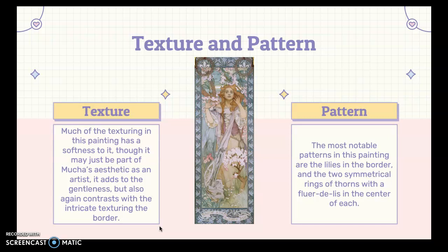The texture isn't very obvious. Everything has a kind of softness to it — even the way the trees are textured almost looks like watercolor. The way the border is textured is more of a contrast to the actual painting because it's very detailed and very intricate, whereas everything else is textured in a very soft way. The most notable patterns are the lilies in the border and the two symmetrical rings of thorns with the fleur-de-lis in the center of each. I didn't notice any other patterns, but I think it lended very well to the way the painting was created.